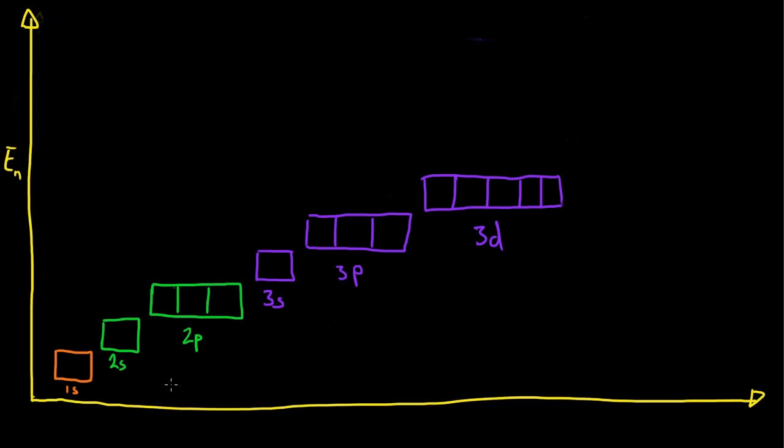In the last video we looked at orbitals, and we saw how the overall structure of these orbitals were arranged like this. We had these discrete energy levels, so we had the first energy level, the second energy level, then the third one, and the fourth one, which is up here.